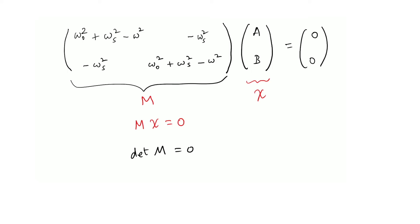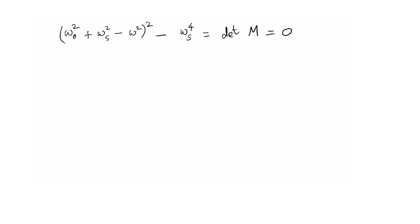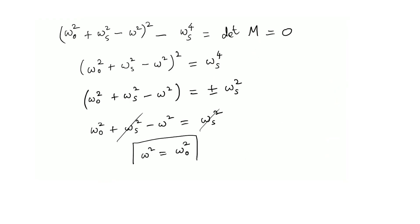This is a standard result in linear algebra — for a system of equations of this form, a non-trivial solution for χ will exist if and only if the determinant equals 0. I will calculate the determinant of M, set it equal to 0, and solve for the only unknown, which is ω. We know what ω_0 and ω_s are; I just need to find the unknown normal mode frequencies.